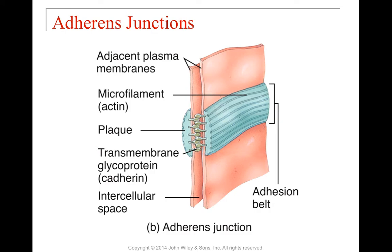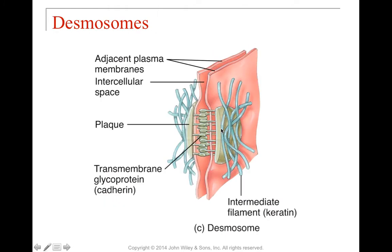Adherence junctions are what we just talked about with the adhesion belt — more like the top of a Ziploc bag. When we have two plasma membranes next to each other, we have a specialized actin layer forming a long plaque. Along there, we have transmembrane proteins called cadherins. The cadherins stick out of one membrane and out of the other, forming a zipper in between that holds together this adhesion belt. That's called an adherence junction.